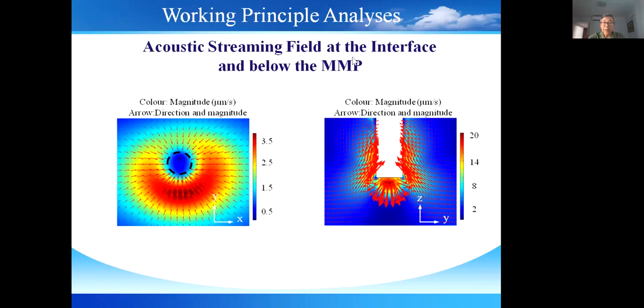The computed acoustic streaming field at the interface near the microprobe are shown by these two figures. This is the interface. This is the acoustic streaming field. This is the tip of the microprobe. From the left panel, we can see that the acoustic streaming flow at the interface can flush the nanoparticles from this region to this region. From the right figure, we can see that the acoustic stream velocity on the substrate under the microprobe tip is very low, so the nanoparticles in this region can settle and then form a concentration spot.